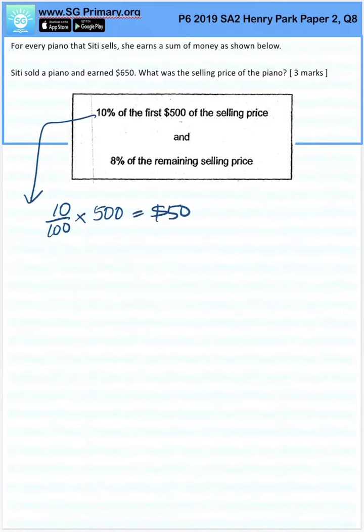Finding 8% of the remaining selling price: she earned $650 minus $50, which is $600. So this 8% is $600 that she earned from the remaining selling price of the piano.